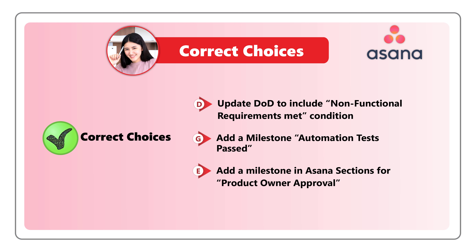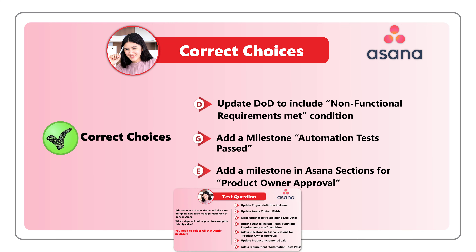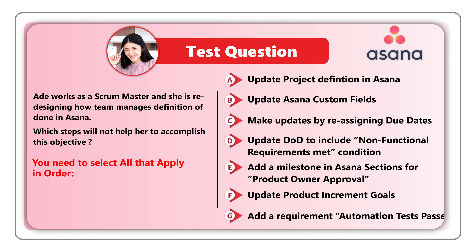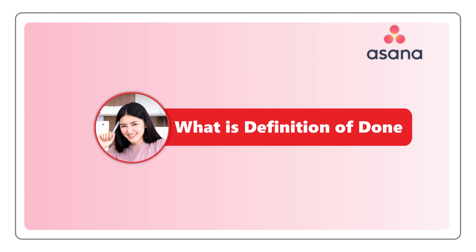What's interesting about this question is that it tests your knowledge of Asana as well as your knowledge of Agile methodology. On top of that, there is a negative selection in the question design — you are being asked which steps will not help her to accomplish this objective.